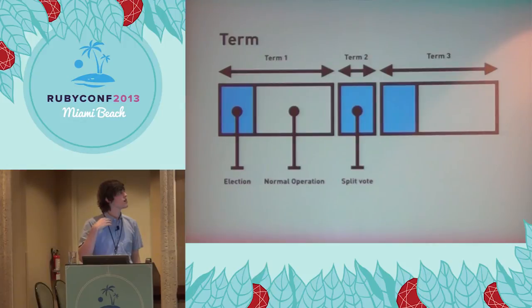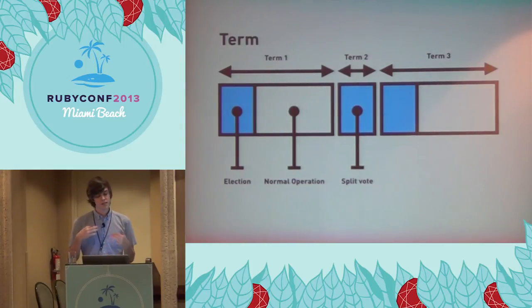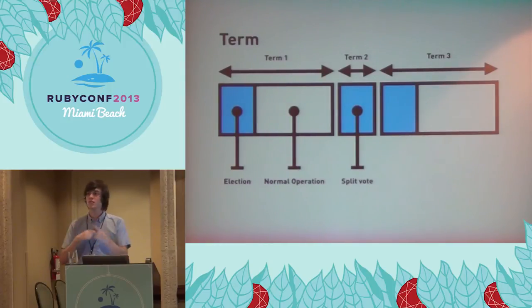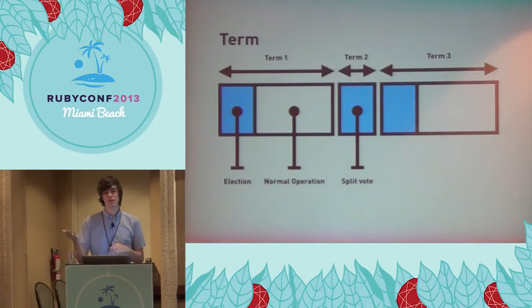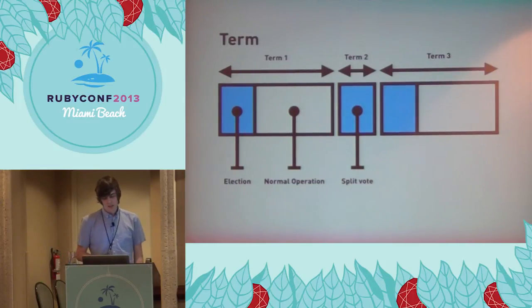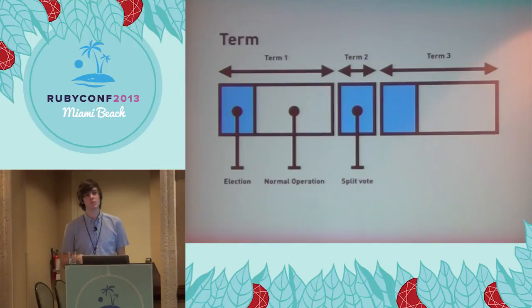So how does a leader know there's a newer leader? Raft uses something called a term — it's really just a replacement for a wall clock. Instead of using a timestamp to know who is the most current leader, we use a number that we increment. Every time there's a new election, when a follower becomes a candidate, they increment their term number. If you're a leader and someone says they're a leader with a higher term, that means they're the most current leader and you step down. You can also use that to make sure you're not voting for more than one person per term.